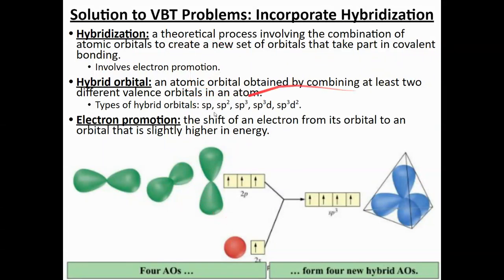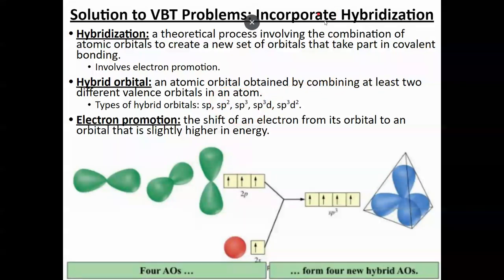There are different combinations of hybrid orbitals you can get: SP made from 1S and 1P; SP2 made from 1S and 2Ps; SP3 made from 1S and 3Ps; SP3D made from 1S, 3Ps, and 1D; and SP3D2 made from 1S, 3Ps, and 2Ds. This is basically valence bond theory with these new terms incorporated to better explain bond angles and shapes observed in the lab.